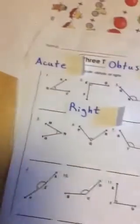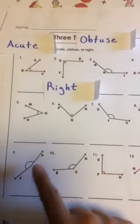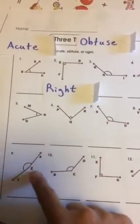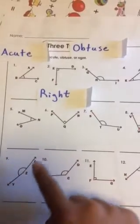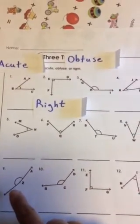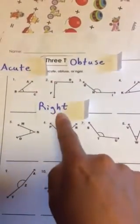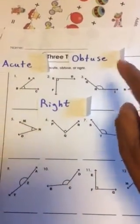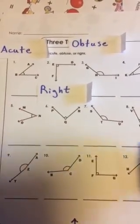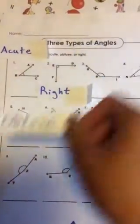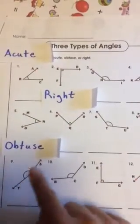Let's look at number nine — Y-Z-A. This one looks like it's pretty big to me. So what do you think, guys — is it acute, right, or obtuse? That's right, guys. It is much bigger than a right angle, so it is obtuse.